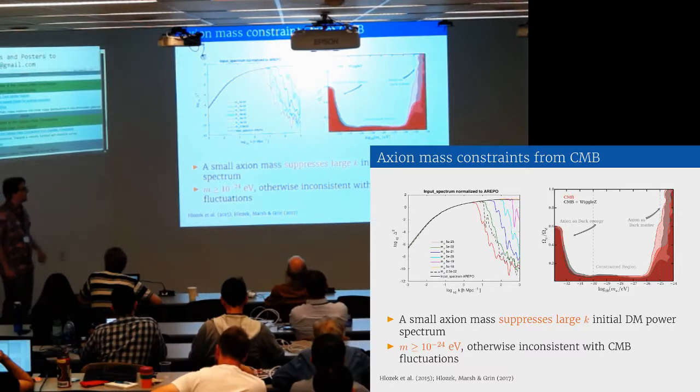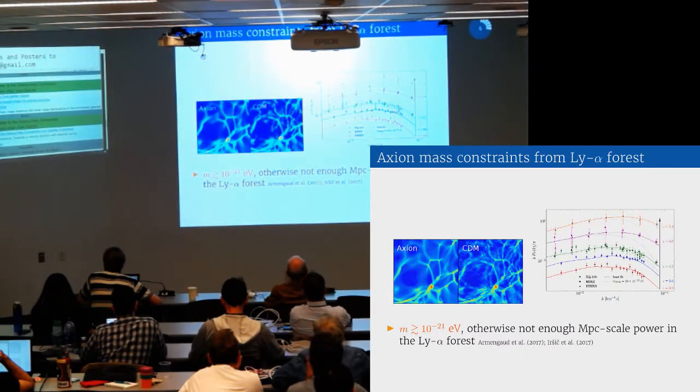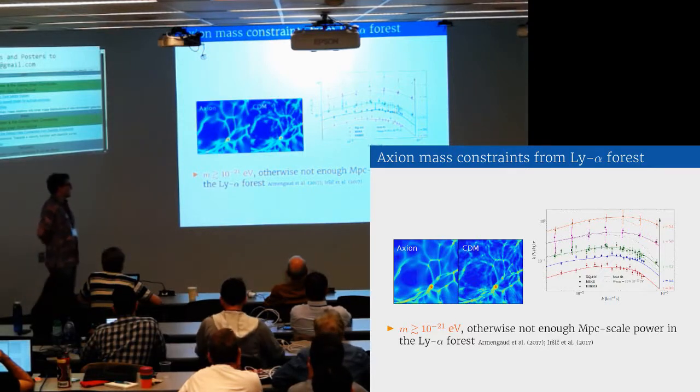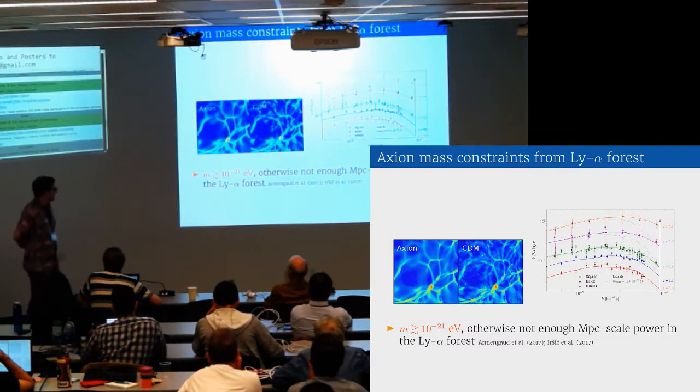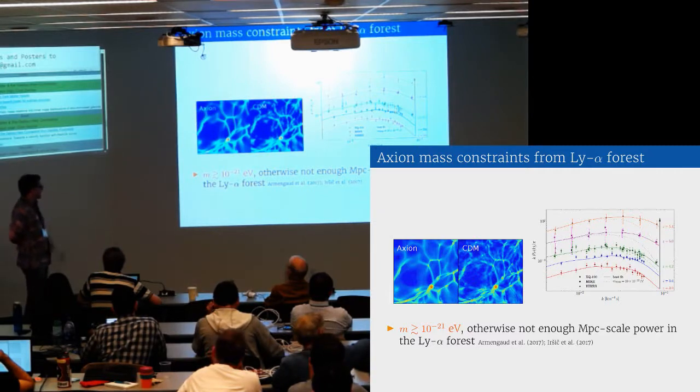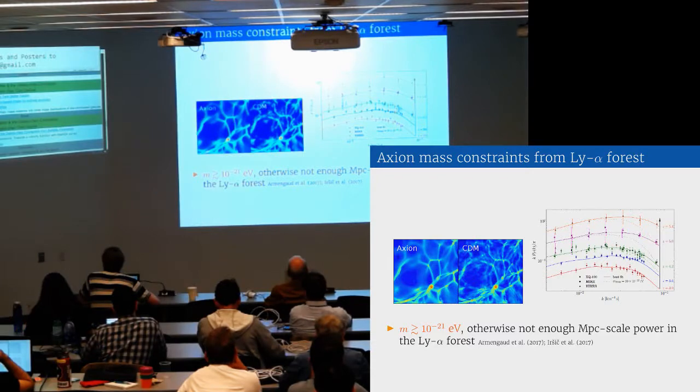In some ways this model behaves a lot like warm dark matter, where you have a cut in your initial power spectrum, you suppress forming small scale structure. There's also constraints from the Lyman alpha forest, which is another measure of the dark matter power spectrum. The constraints say that the particle mass has to be around 10 to the minus 21 eV or larger, otherwise you don't get enough power on megaparsec scales at redshift 5 to be consistent with the Lyman alpha forest. Of course there's a number of assumptions that go into this model, which I'll talk about a little bit later.